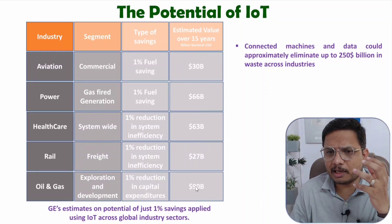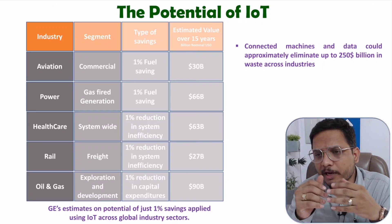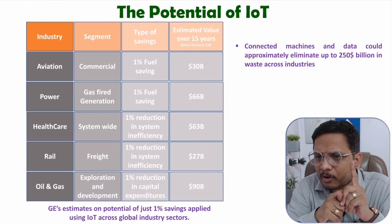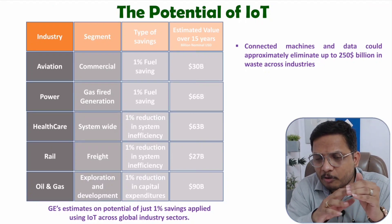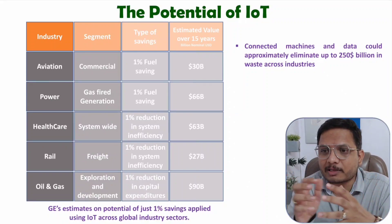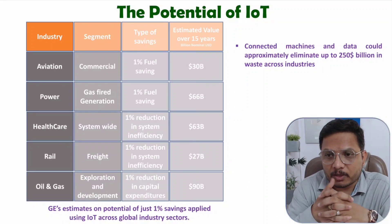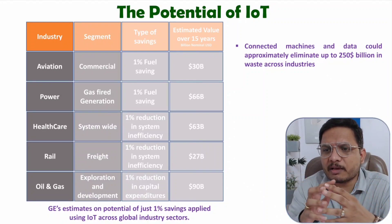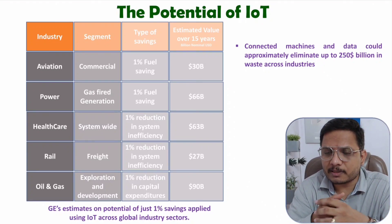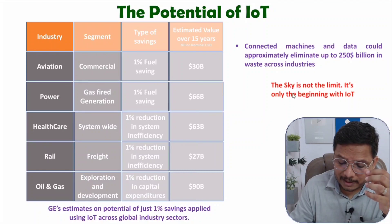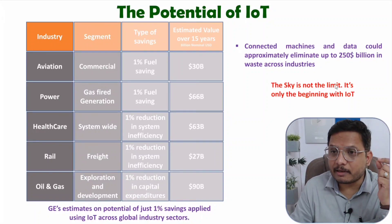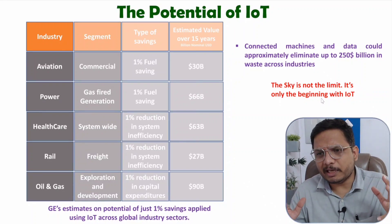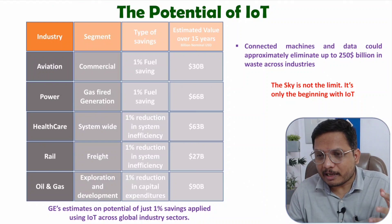So I have listed just a few industries here, using data from General Electric's website where the estimated saving was only 1%, and already more than 250 billion dollars could be saved. Just think about the practical scenario where there can be trillions of dollars of savings in upcoming years with the use of IoT services. Sky is not the limit — it is only the beginning with IoT, as there are many possibilities yet to be explored, and in future many engineers across all disciplines — IT, mechanical, civil — will be using Internet of Things services.